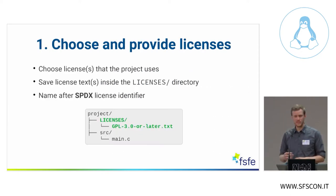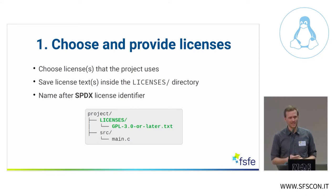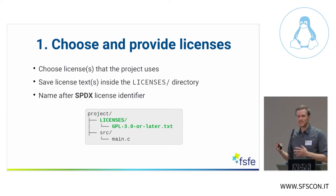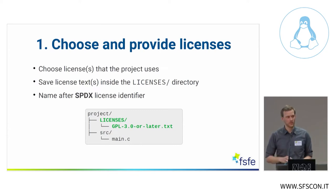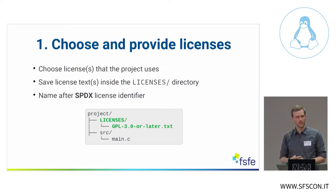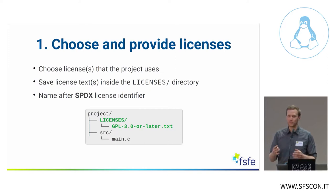The first step — choose and provide licenses — should be quite obvious, though it's actually a hard choice: which license do you take? For new projects, we ask people to really think about this carefully. You save the full license text in a dedicated licenses folder, using the SPDX license identifier as the filename. SPDX is a project whose main contribution is to provide unique identifiers for every license, so you can no longer confuse different GPL versions. For example, GPL-3.0-or-later is saved under that exact identifier in the licenses folder.